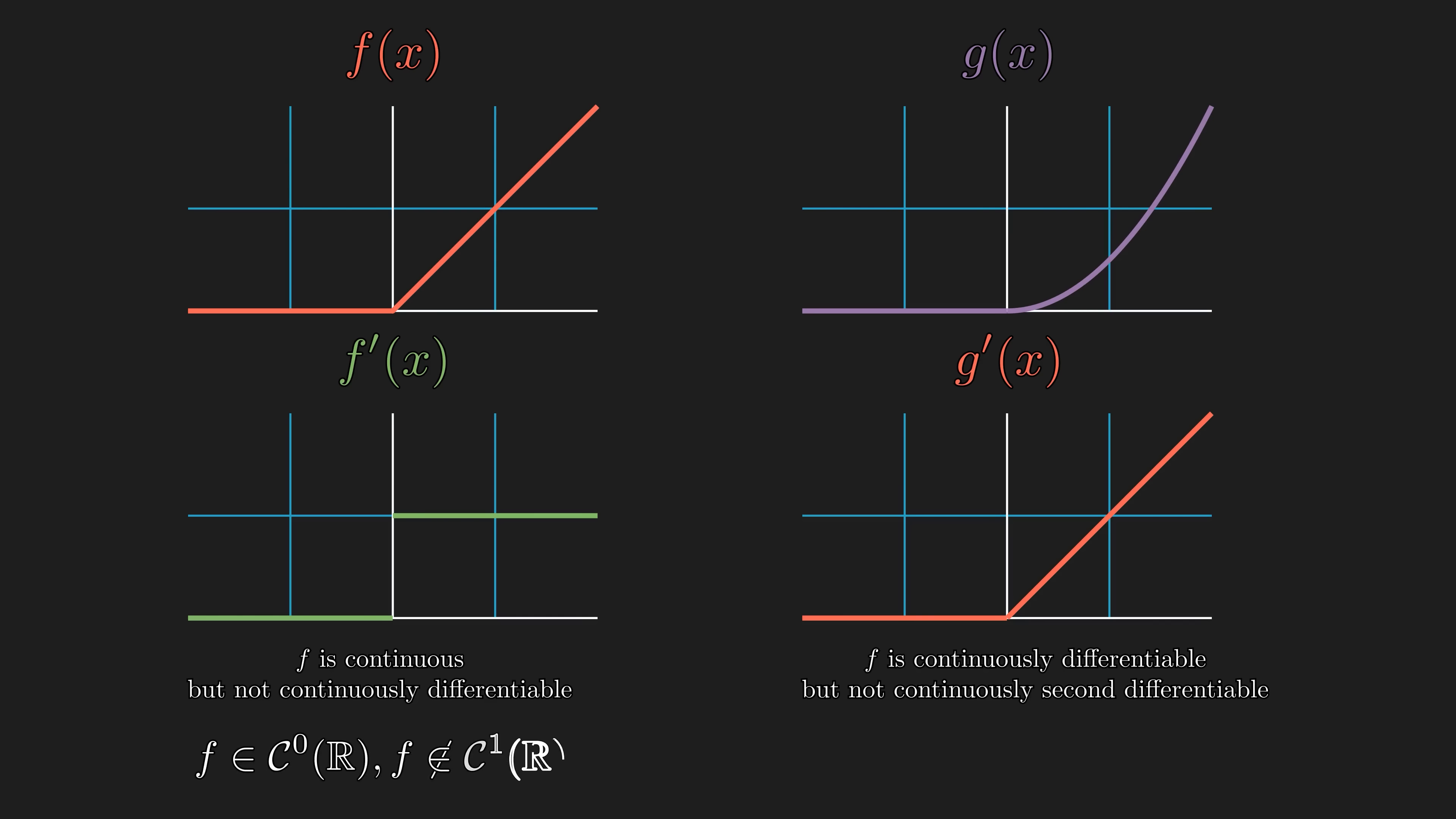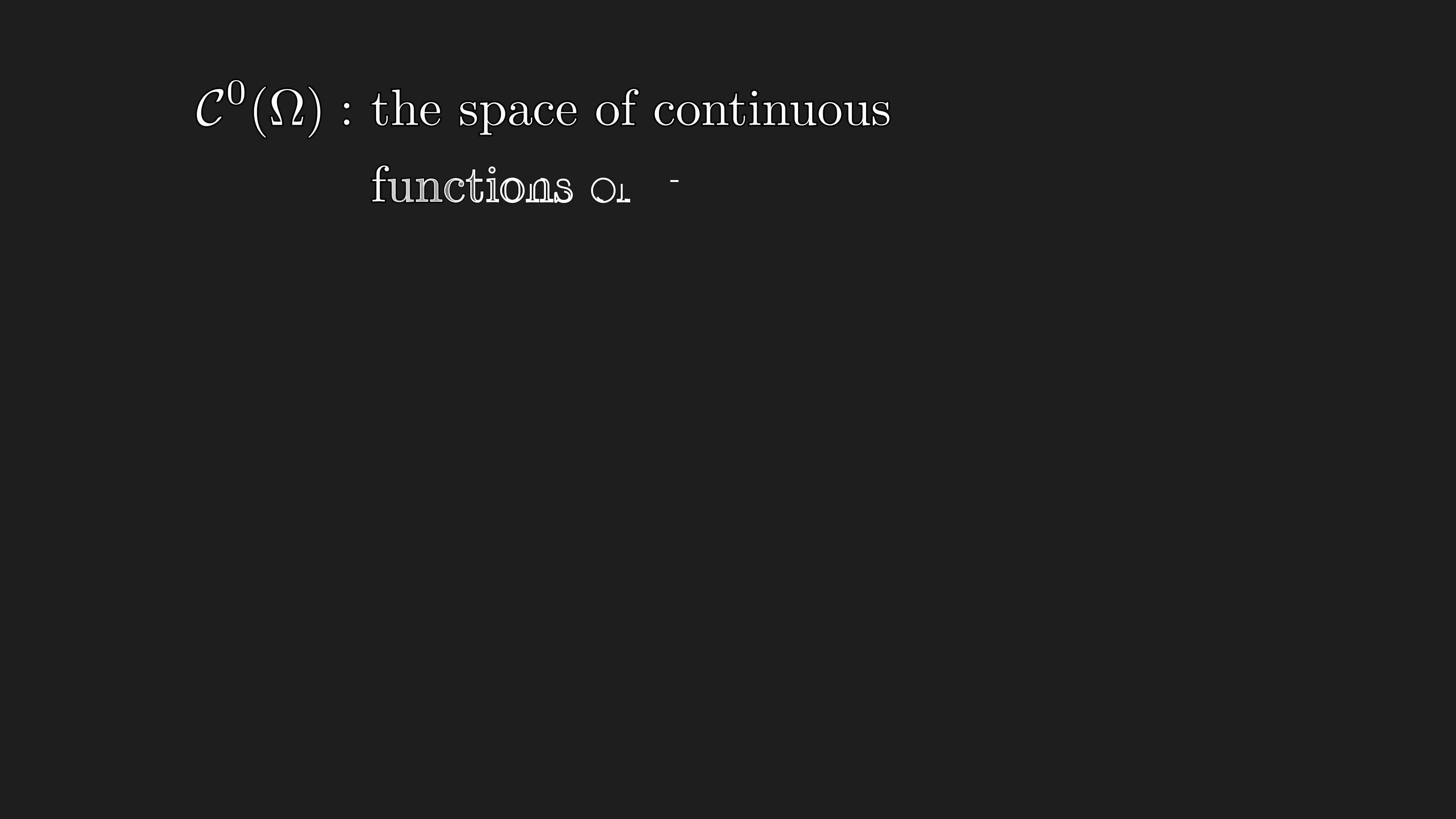We say f(x) lives in C^0, which is the space of continuous functions, but not C^1, which is the space of continuously differentiable functions. And similarly, g lives in C^0 and C^1, but not in C^2. In short, C^k tells us how many continuous derivatives we can take.